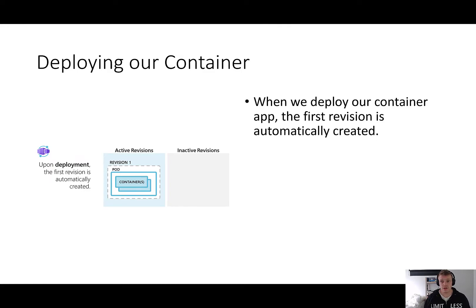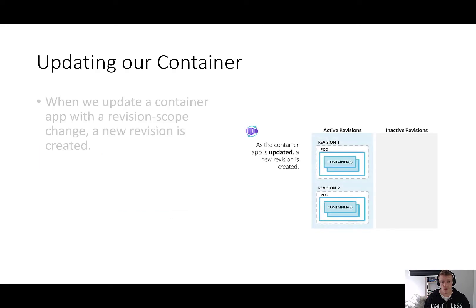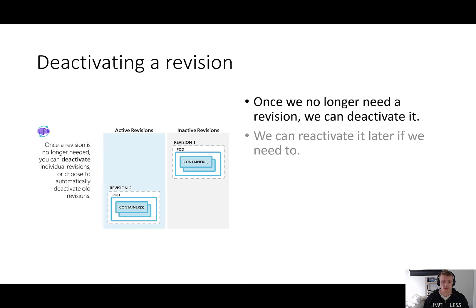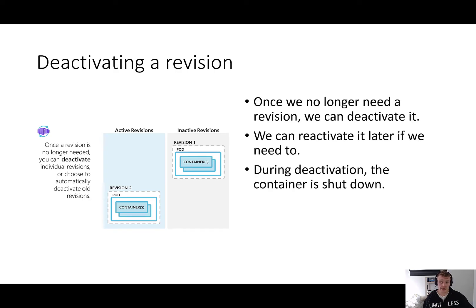The application lifecycle for actual container apps revolves around revisions. When we deploy our container app, our first revision is automatically created for us. As we update our container app with a revision scope change, a new revision will be created. We'll then have the choice to either automatically deactivate the old revision or allow it to remain available. And once we no longer need a revision, we can deactivate it with the option to reactivate it later. When we deactivate a revision, the container being used in that revision will shut down.